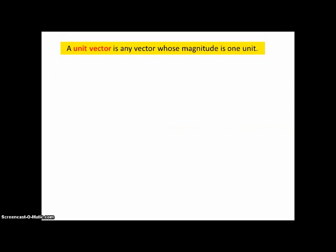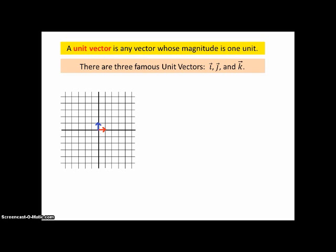A unit vector is any vector whose magnitude is one unit. There are three famous unit vectors, i, j, and k. Here's a picture of i and a picture of j. i is parallel to the x-axis, j is parallel to the y-axis.